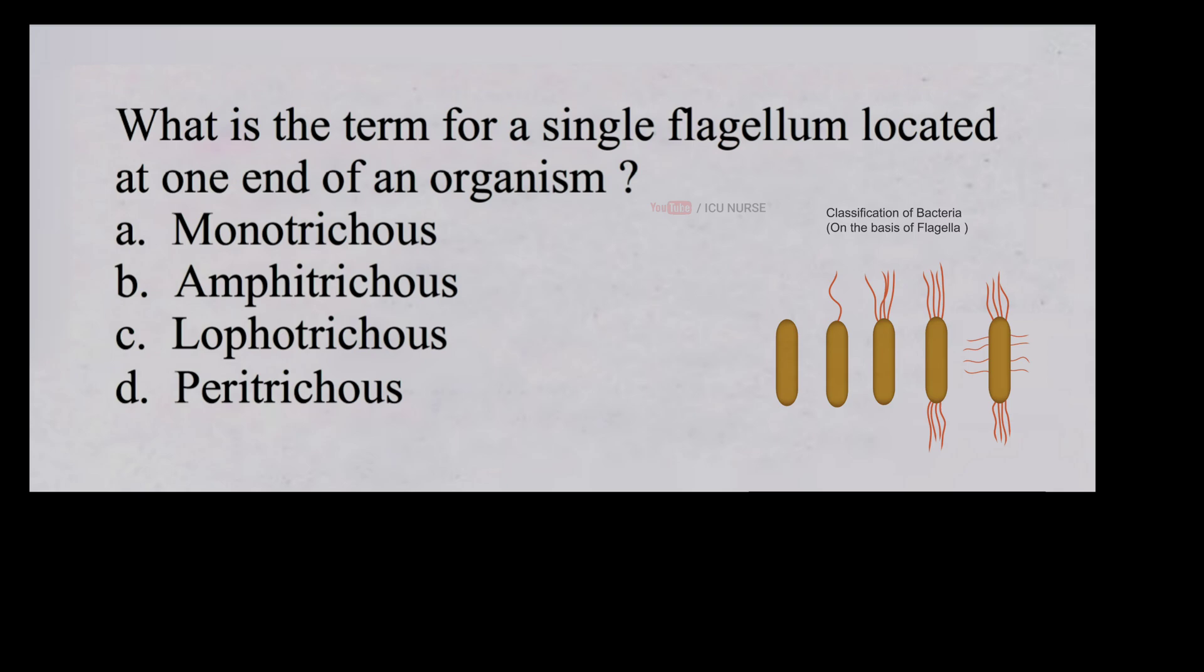What is the term for a single flagellum located at one end of an organism? a. Monotrichous, b. Amphitrichous, c. Lophotrichous, d. Peritrichous. And the correct answer is a. Monotrichous.